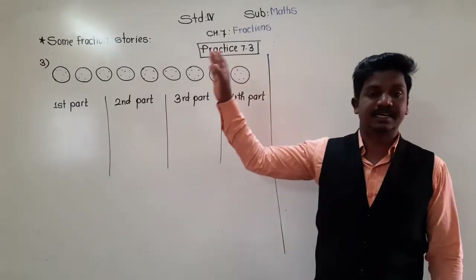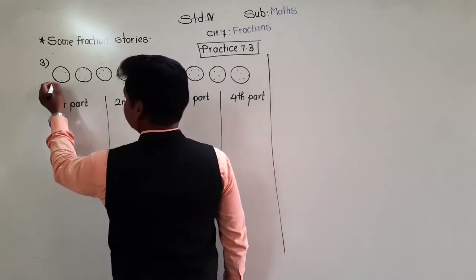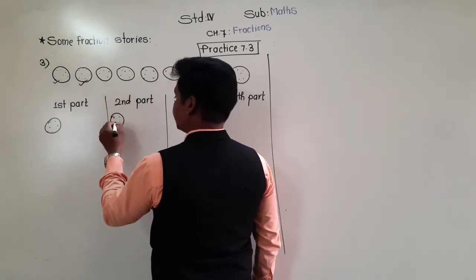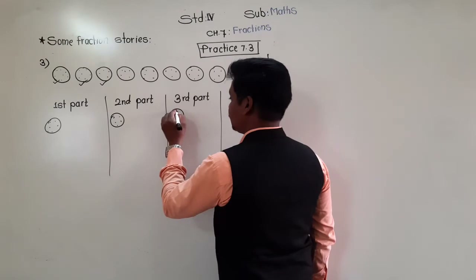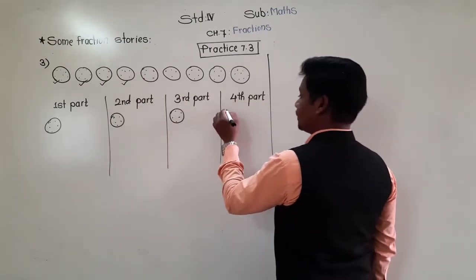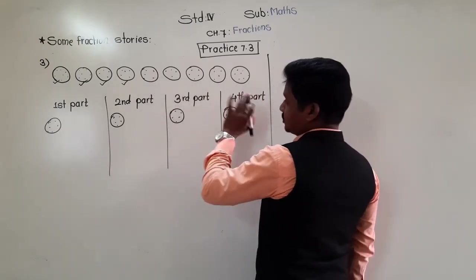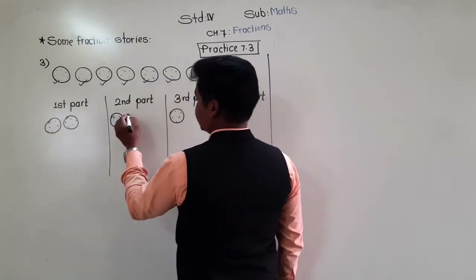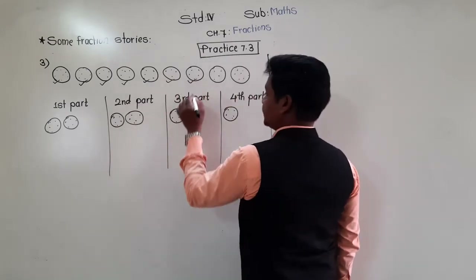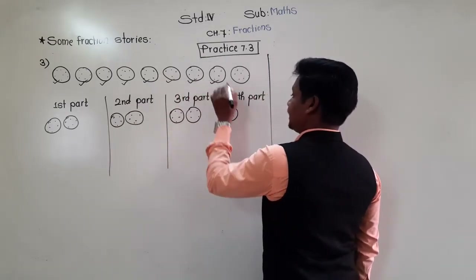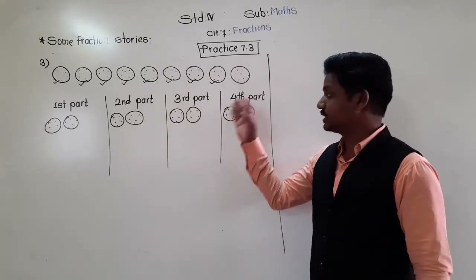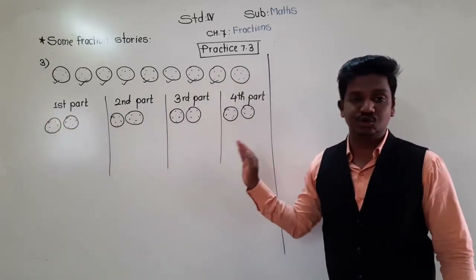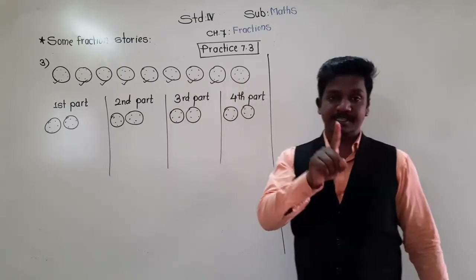Let's divide the 9 pizzas into 4 equal parts: 1st pizza in part 1, 2nd in part 2, 3rd in part 3, 4th in part 4. Then the next round: 5th pizza in part 1, 6th in part 2, 7th in part 3, 8th in part 4. After dividing 8 pizzas, each group has 2. Only 1 pizza is left.